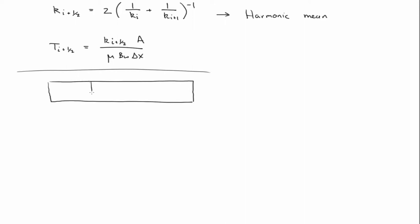So in this case, we'd have the i minus 1 grid block, the i-th grid block, and the i plus 1 grid block.